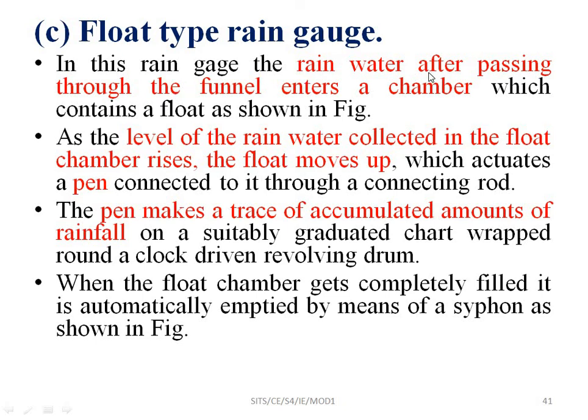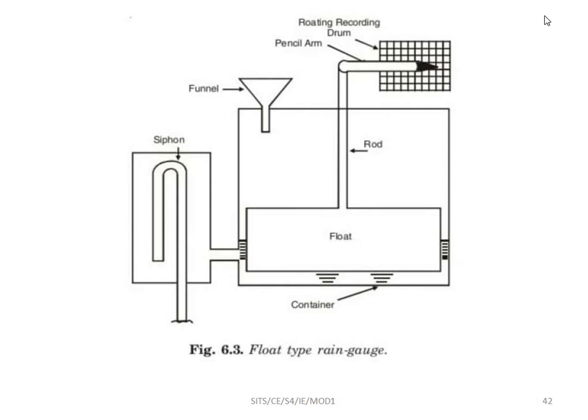In the float type rain gauge, after passing through the funnel the rainwater flows into a float chamber. As the level of rainwater collected in the float chamber rises, the float moves up, which moves the pencil connected to it through a connecting rod. When the float chamber gets completely filled, it is automatically emptied by means of a siphon. This is the float type rain gauge.